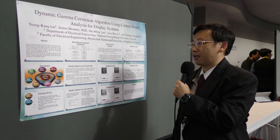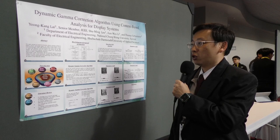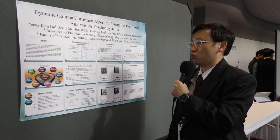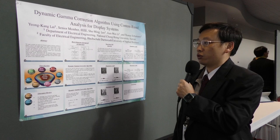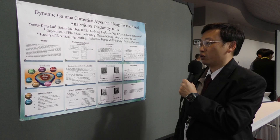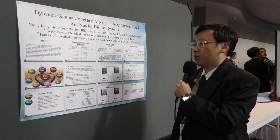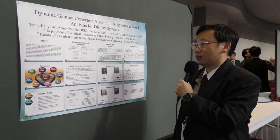The proposed gamma correction method uses content-based analysis to reduce computational complexity. Experimental results demonstrate that the proposed method has better visual assessment, absolute mean brightness error, contrast enhancement, and similar edge loss rate quality, all superior to traditional methods.